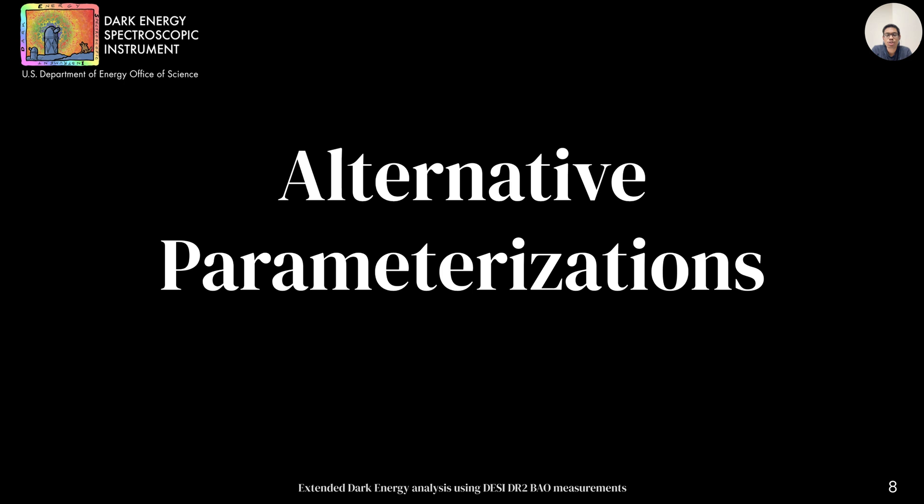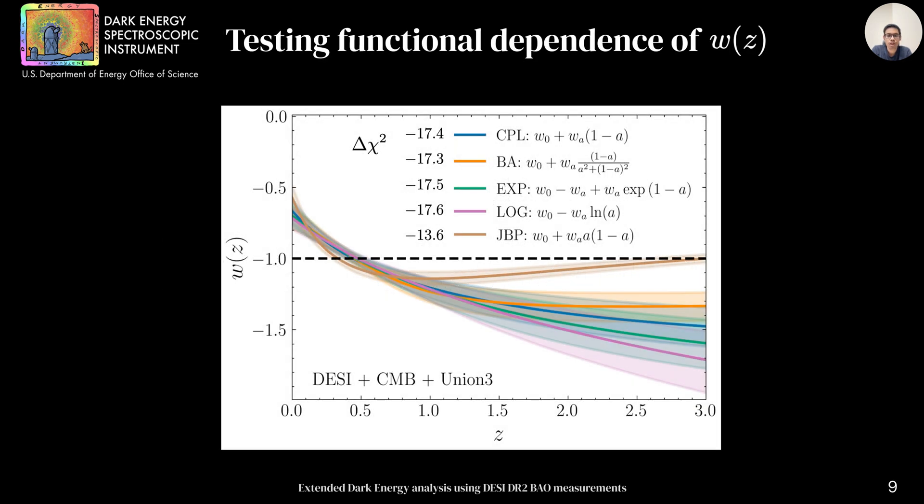To test the robustness of these results, we examine several alternative parameterizations for dark energy. First, we start by considering several two parameter extensions with different functional forms. And as we can see in the plot, they capture similar trends at low redshift. Despite their differences in high z behavior, they give identical or worse fit to the data compared to CPL, indicating data's inability to distinguish between these functional forms.